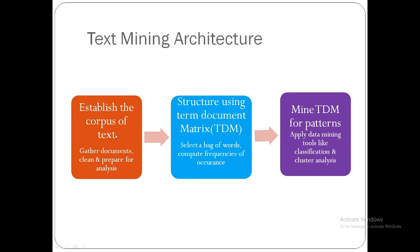In the first step, it gathers the documents, cleans them, and prepares for analysis. In the next step, it selects a bag of words and computes the frequency of occurrences — how many times each particular term has occurred — recorded in the TDM. Then we apply data mining tools like classification and cluster analysis to get our results.